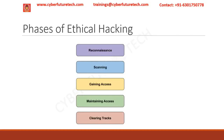Second is vulnerability scanning: the attacker uses automated tools to find weaknesses or vulnerabilities that can be exploited in the target machine. Third is network mapping: the attacker tries to gather host information, routers, firewalls, servers, network topologies, and draws a network diagram with the available information.